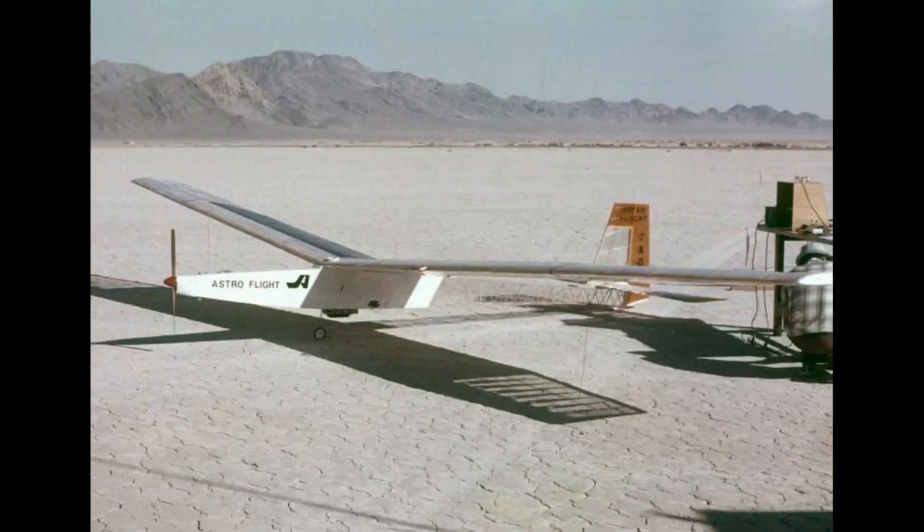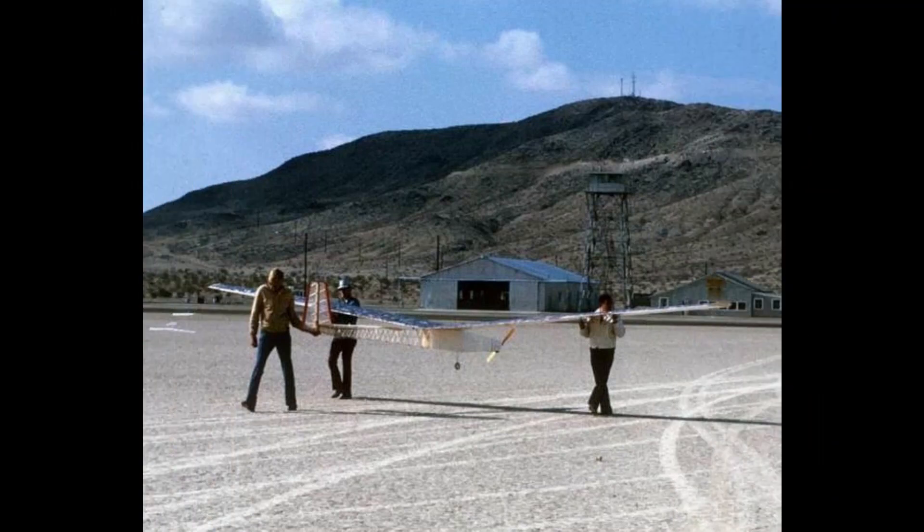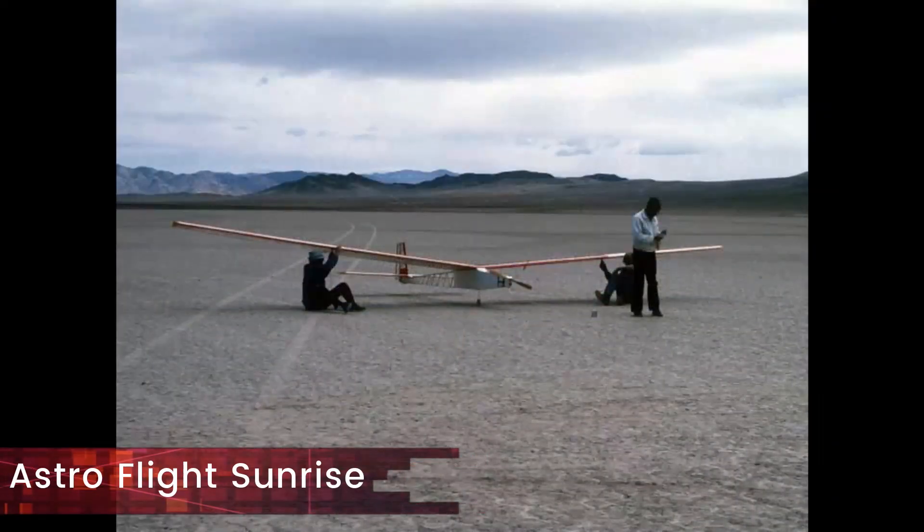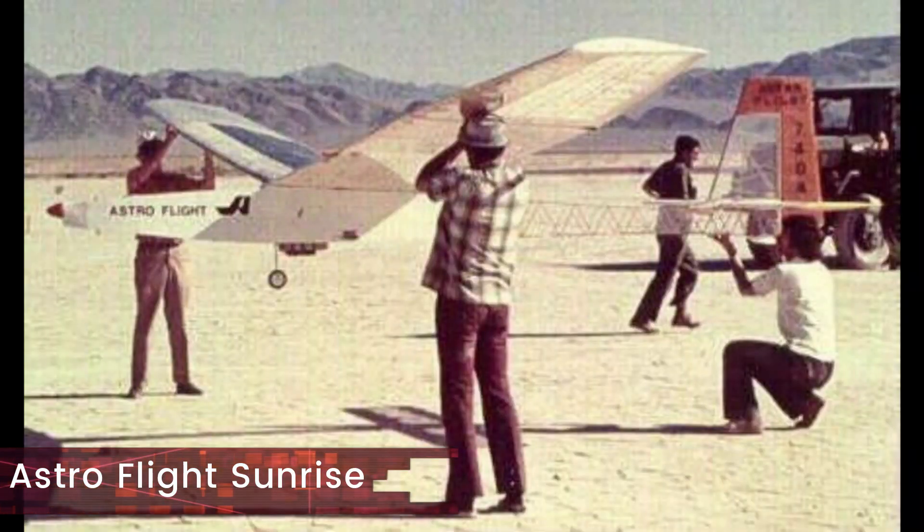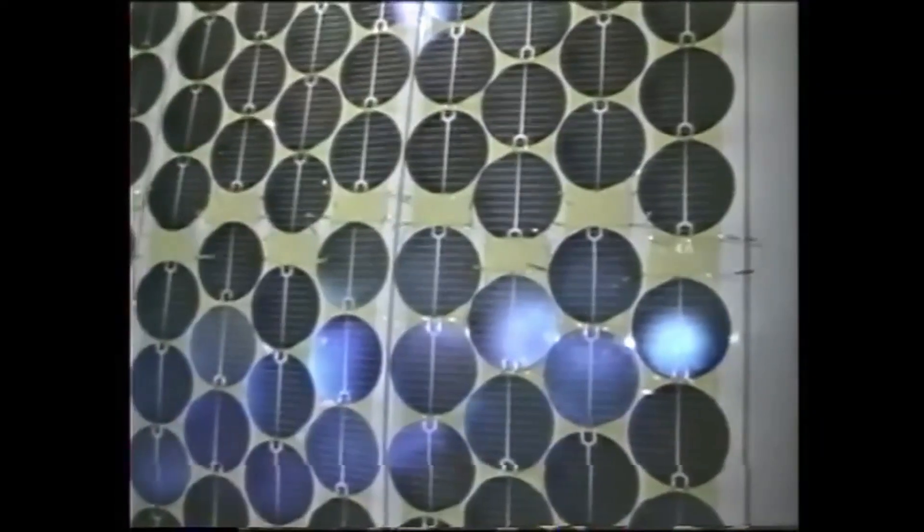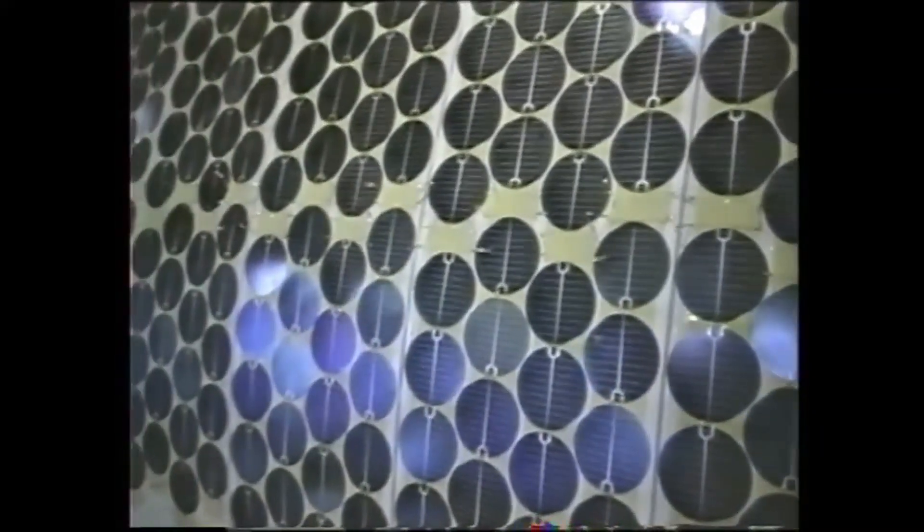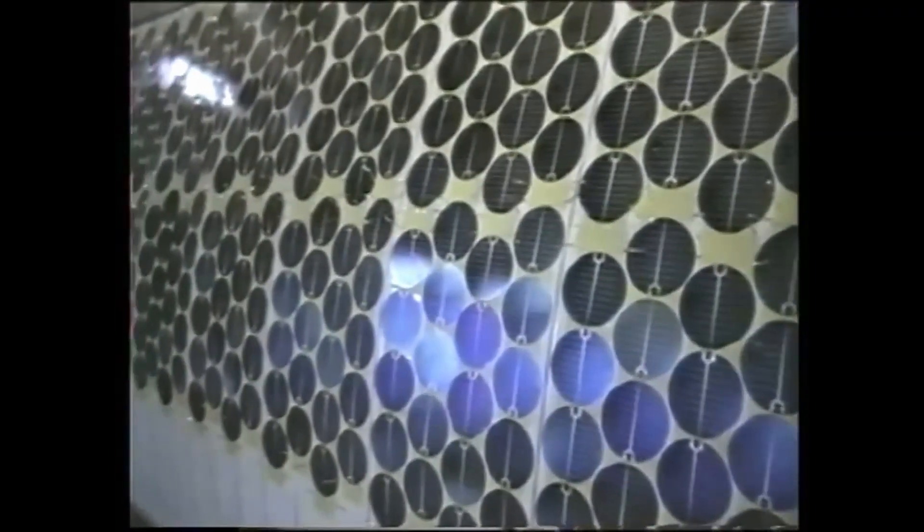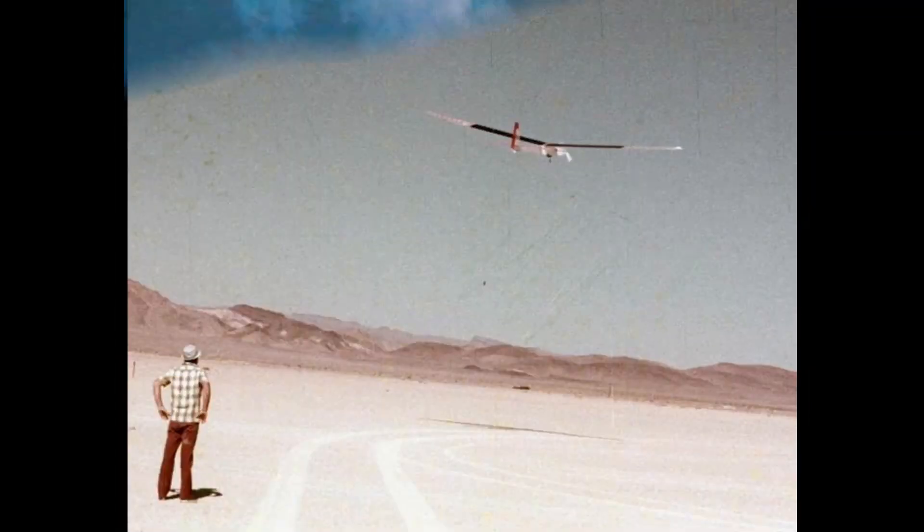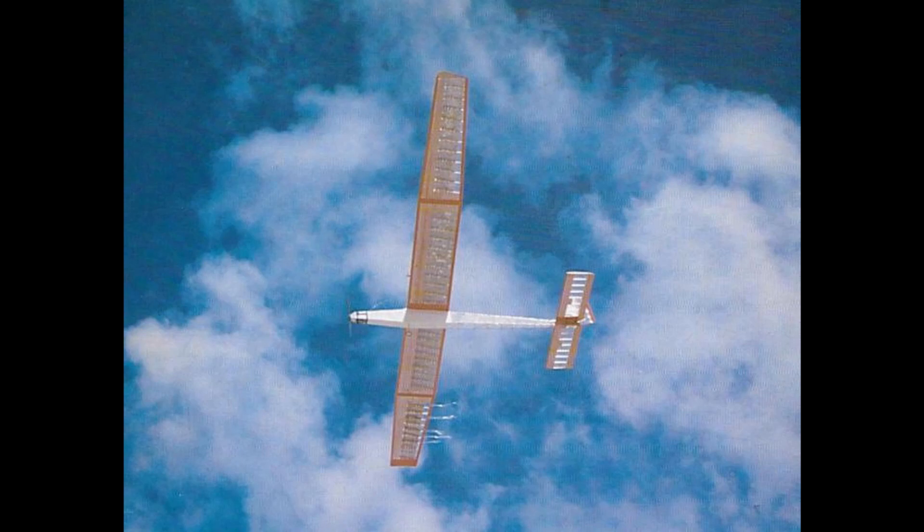Solar aerial vehicles have been around for a long time. In fact the first unmanned solar aircraft called the Astroflight Sunrise had its maiden flight on the 4th of November 1974. At that point the best commercially available solar cells were only 10% efficient. So an extremely lightweight aircraft was made that could run on just 500 watts of total power.